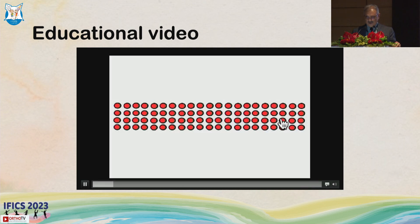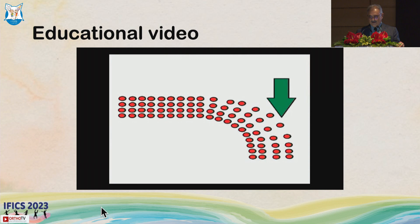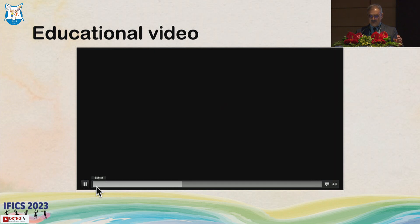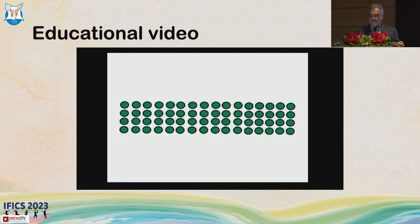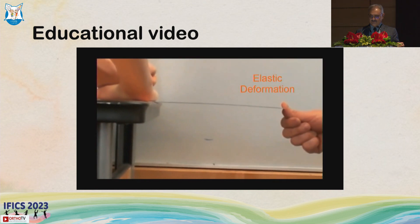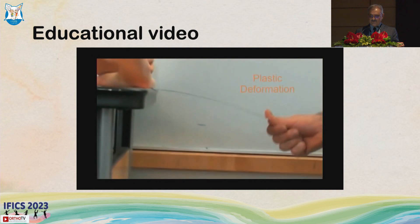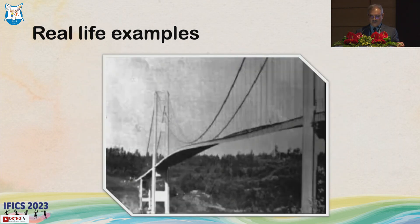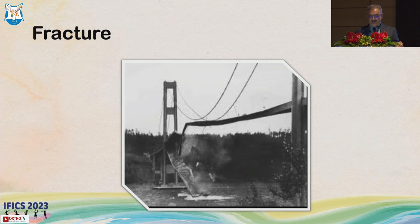Let us see what is plastic deformation. When you bend a spring there is some deformation but it comes back — that is elastic deformation. If you leave the force it comes back. But when you give more force and it does not come back to its original place, it is known as plastic deformation. In real life, this is the suspension breach, and when that suspension breaks it leads to fracture, and this fracture we call plastic deformation.